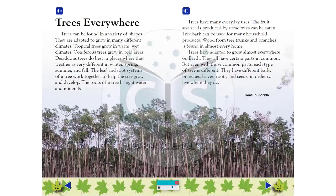They all have certain parts in common. But even with those common parts, each type of tree is different. They have different bark, branches, leaves, roots and seeds in order to live where they do.